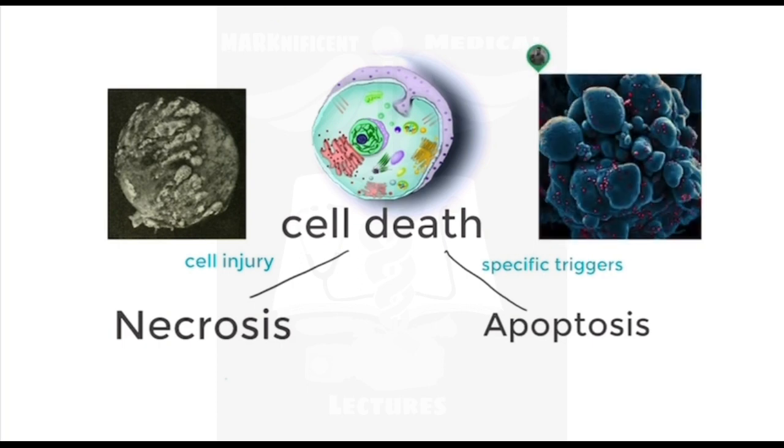Apoptosis can occur under physiological conditions, such as the removal of unwanted cells during embryogenesis. It can also occur as a response to cell injury such as DNA damage, in cases where the cell remains capable of activating the cell death program. If there is severe damage and the cell lacks the energy to undergo organized degradation, it can shift from apoptosis to necrosis.